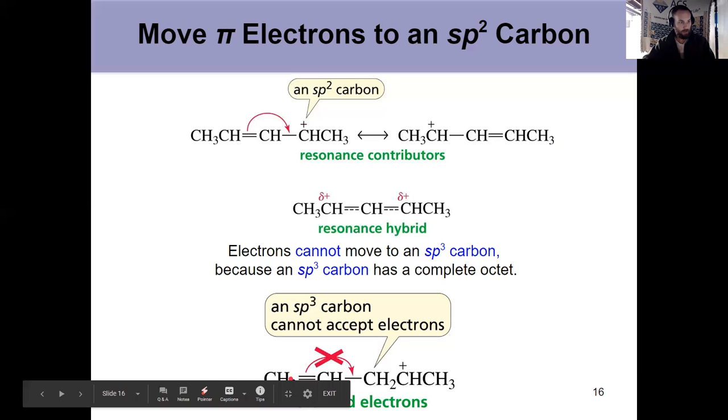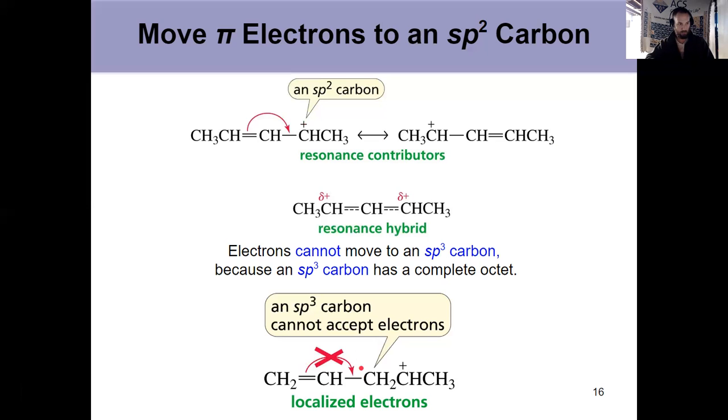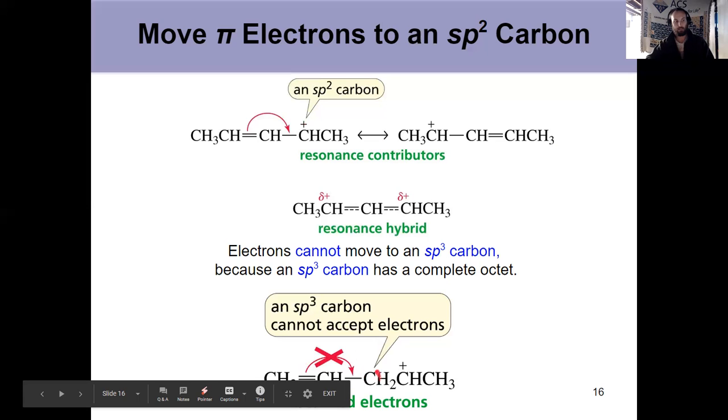But notice that that's popping a bond over and moving my positive charge. If I move that down here, well, now my carbocation is too far away. I can't move that pi bond in this bottom example because the carbon that's closest to my cursor right now is sp3 hybridized. It can't accept those pi electrons and move the positive charge. So this positive charge is localized. These pi electrons are localized. So be careful with these.